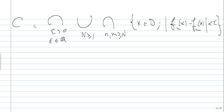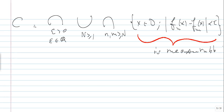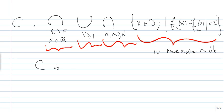This shows that C is measurable, because F_n and F_m are measurable. A countable intersection of measurable sets is measurable, and a countable union of measurable sets is measurable. We now have a countable intersection of measurable sets, and therefore C is measurable.